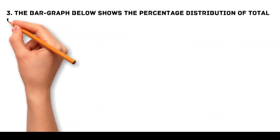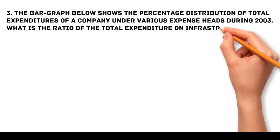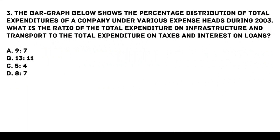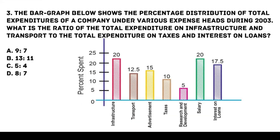Problem 3: The bar graph below shows the percentage distribution of total expenditures of a company under various expense heads during 2003. What is the ratio of the total expenditure on infrastructure and transport to the total expenditure on taxes and interest on loans? Options: a. 9:7, b. 13:11, c. 5:4, d. 8:7.